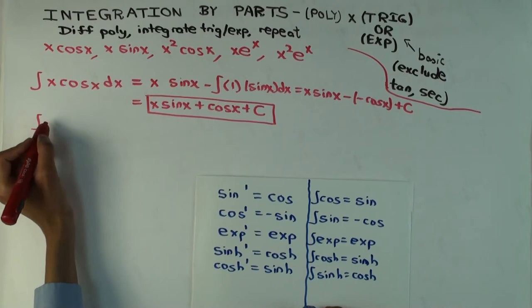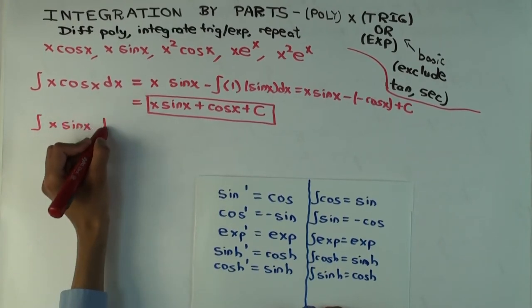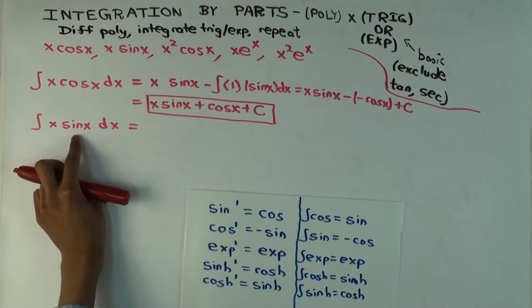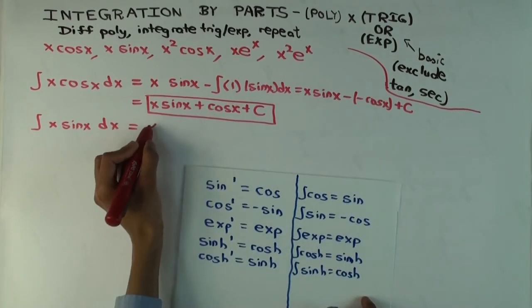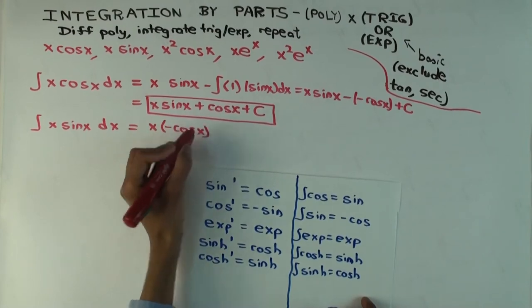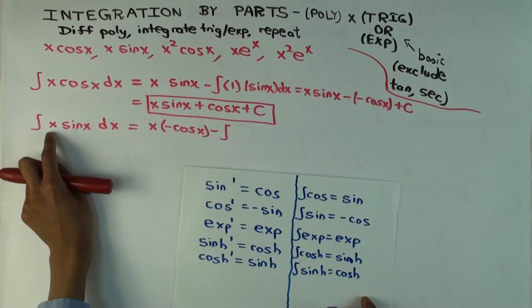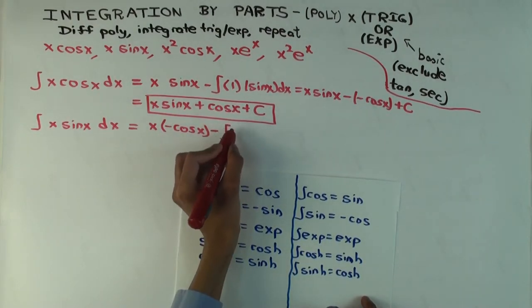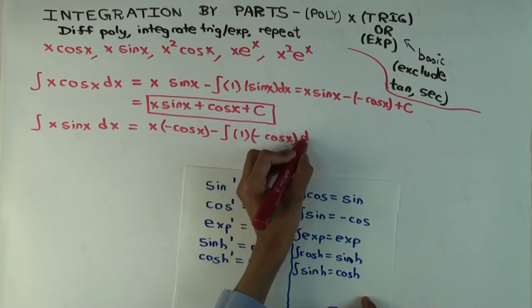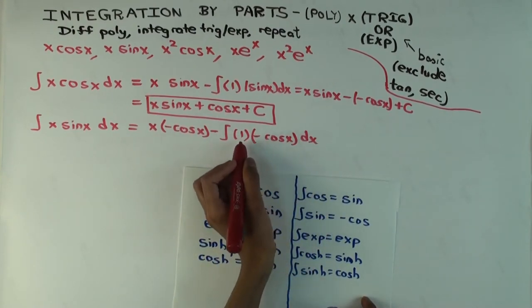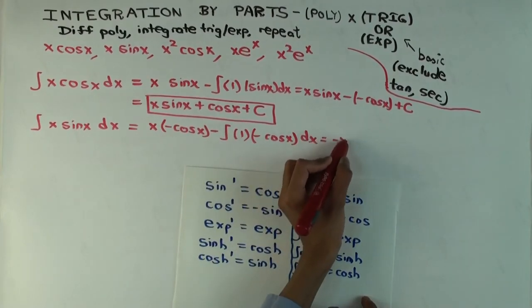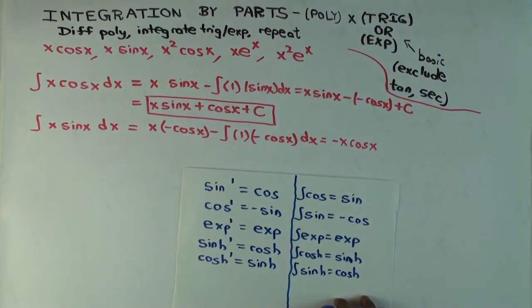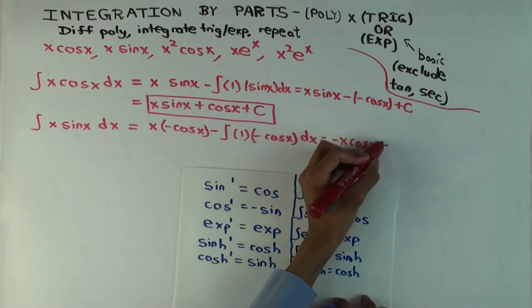The next example: ∫x sin(x) dx. The part to differentiate is the polynomial x, and the part to integrate is the trig function sin(x). The integral of sine is negative cosine. So you get x times (−cos(x)) minus the integral of (derivative of x = 1) times (−cos(x)). That's −x cos(x) minus of (−sin(x)), giving −x cos(x) + sin(x) plus C.